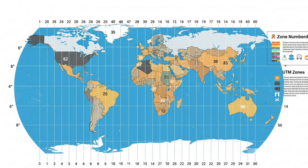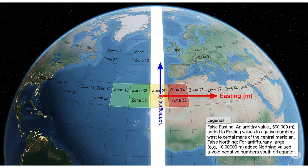Most GIS software like ArcGIS, QGIS, or Google Earth Engine supports UTM projections directly. You can usually select the correct UTM zone by choosing the right EPSG code. For example, EPSG 32636 is UTM Zone 36 using the WGS 84 datum, used for Ethiopia.